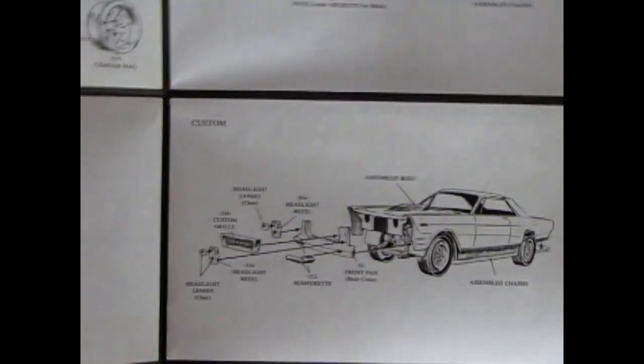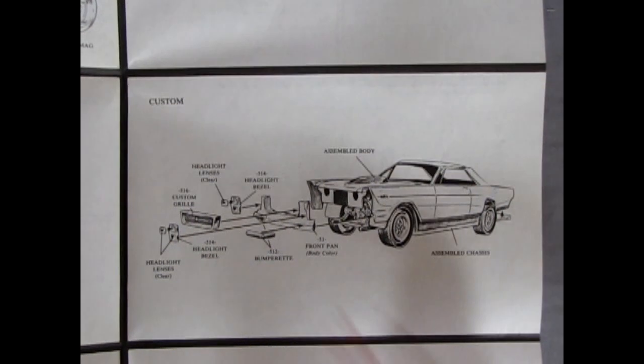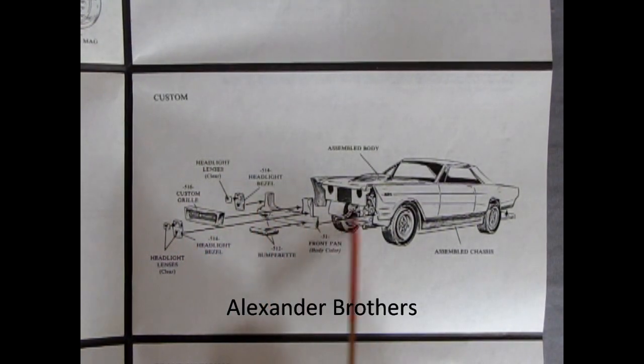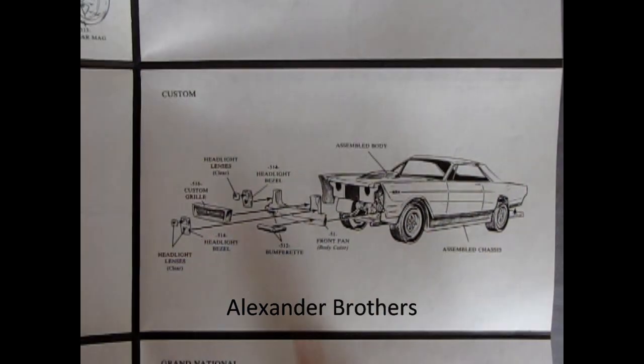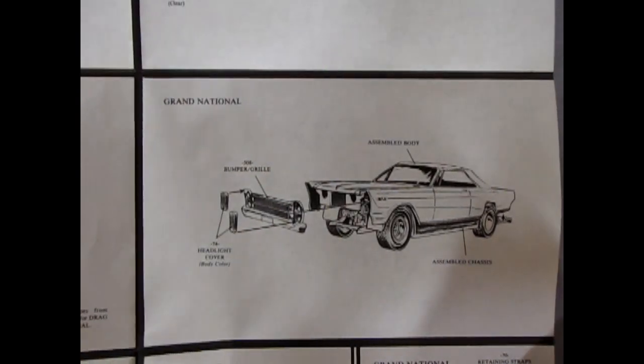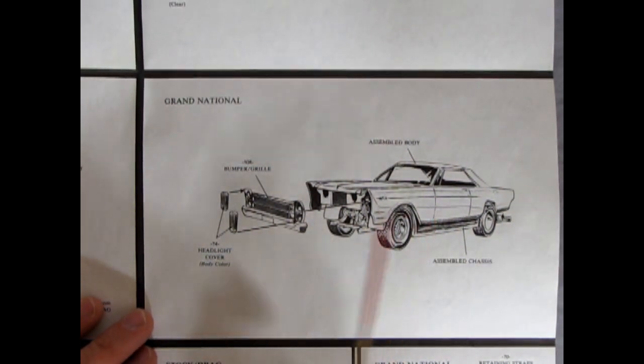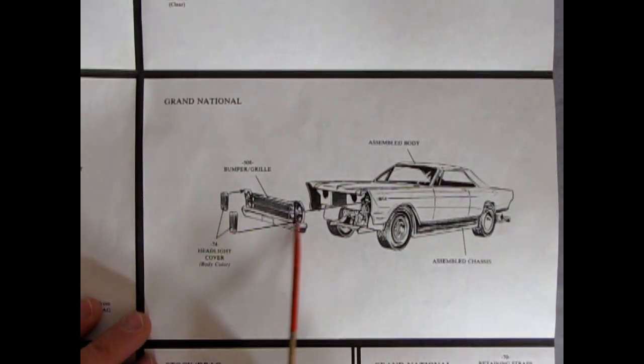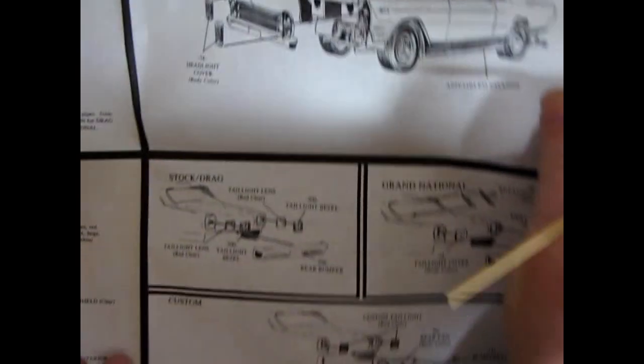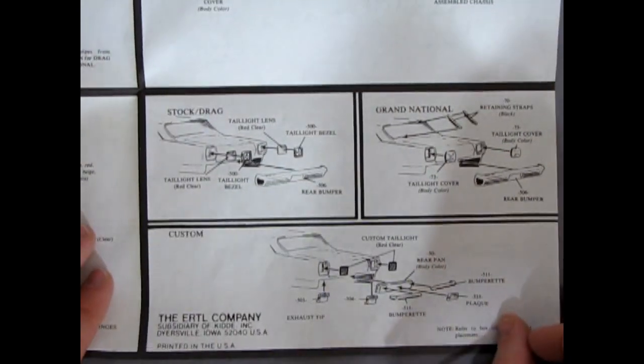And then the last couple of panels here are the body assemblies. So you've got your stock and your drag. And then here's the custom one. And the custom one has the nice George Barris Chrysler 300 style grille going in here. And bumperettes. And then here we've got our Grand National. And this is the NASCAR style. You cover up your headlights with these big covers. Much like they did in real racing.